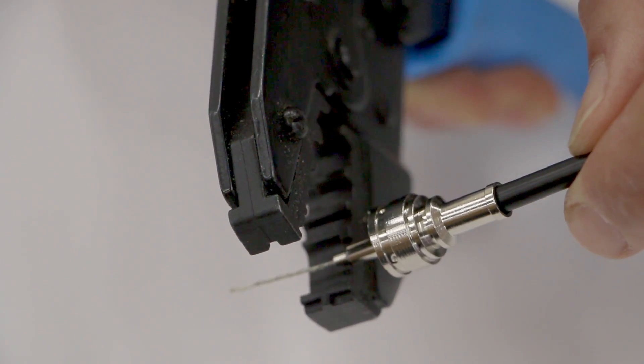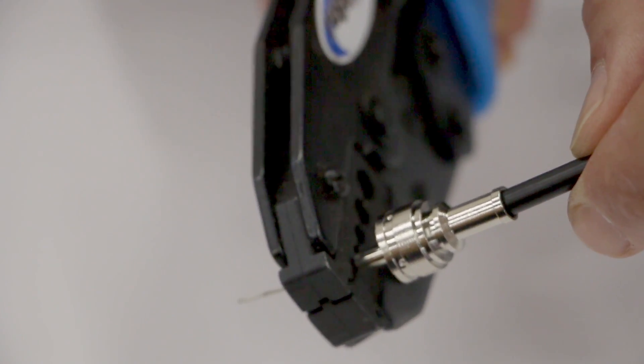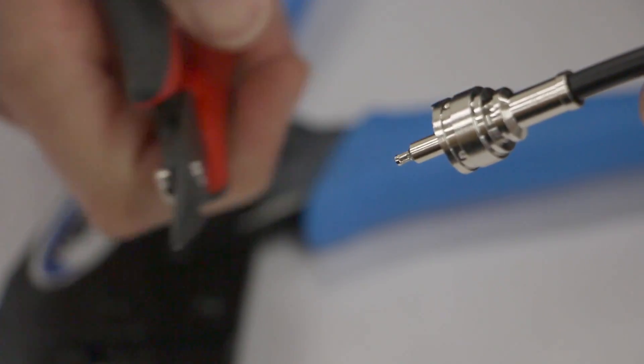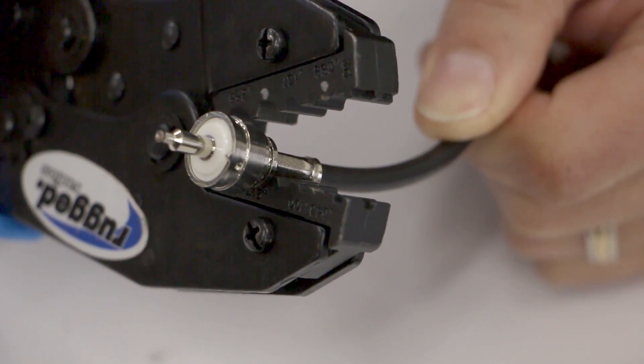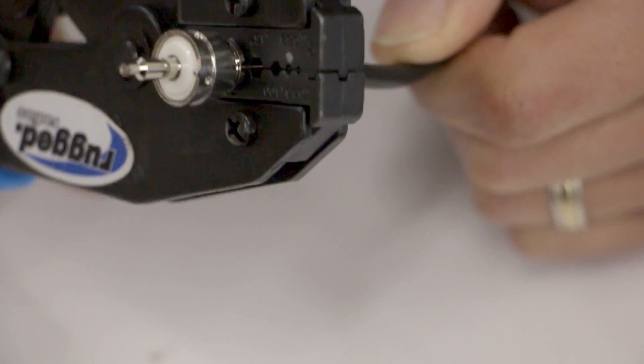Next, use the crimp tool to crimp the connector tip. Then, cut away any excess wires. Use the crimp tool one last time to cinch the connector to the wire.